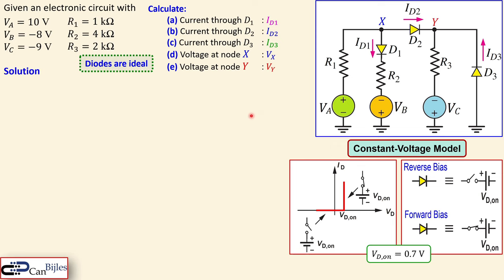In our solution we assume a condition for these three diodes, because we can have multiple combinations. We say every diode — D1, D2, and D3 — are ON. I could also begin with D1 off and D2 and D3 on, but let me start with everything ON and work it out. Afterwards we'll verify if this assumption is really correct.